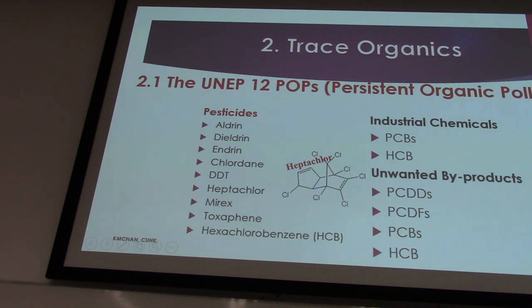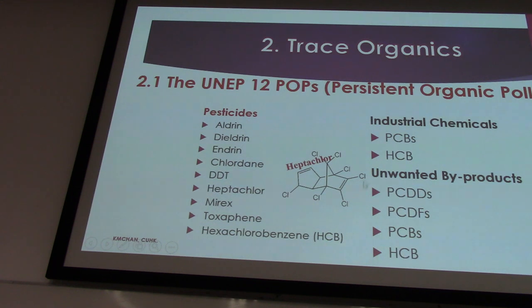Why are they so persistent? Because they have this carbon ring, making them very stable. Not just that — they also consist of what we call chlorinated compounds. These chlorinated compounds, including industrial chemicals or unwanted by-products like dioxin or furans, are still affecting everything.